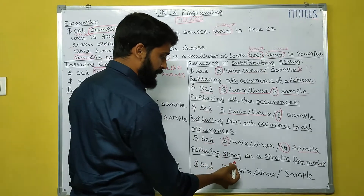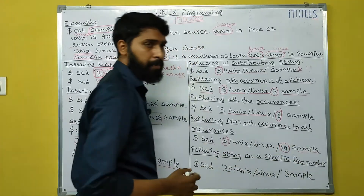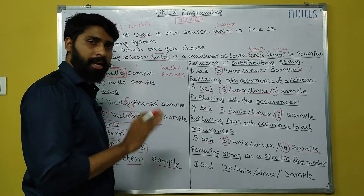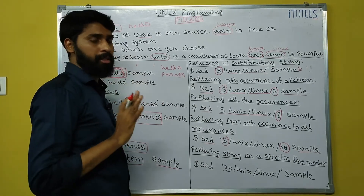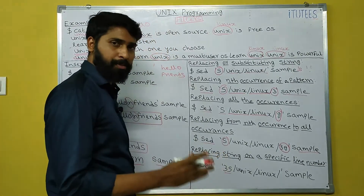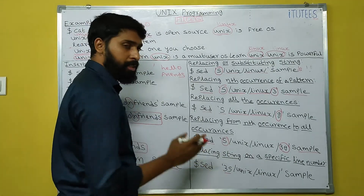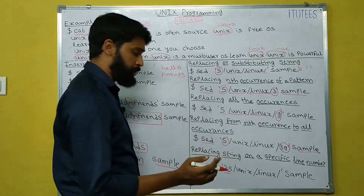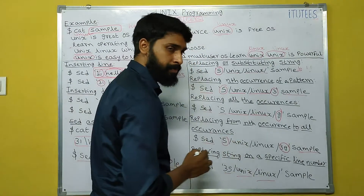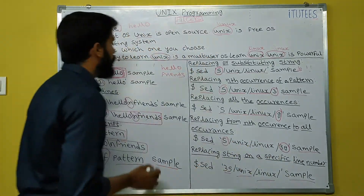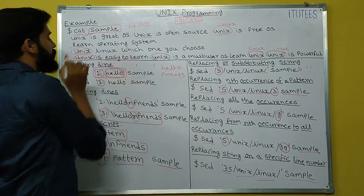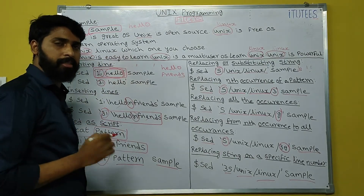Replacing the string on a specific line number: to change unix to linux in the third line only, use: SED '3s/unix/linux/' sample. The '3' specifies the third line and 's' means substitute. Only in the third line will unix be changed to linux.